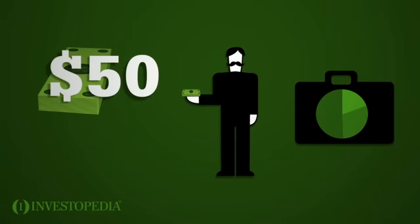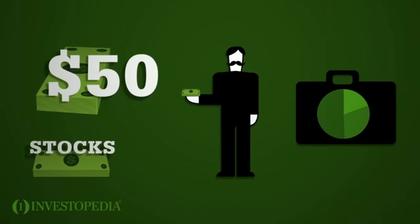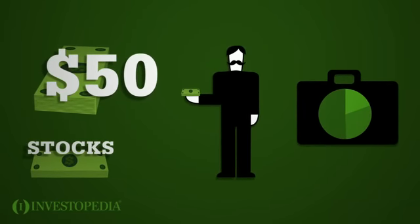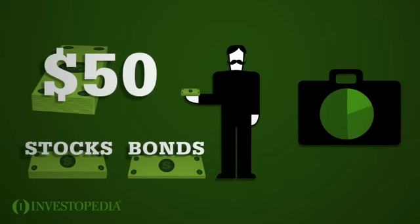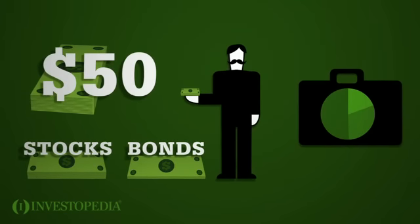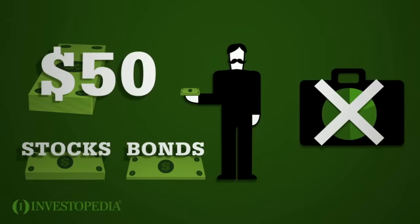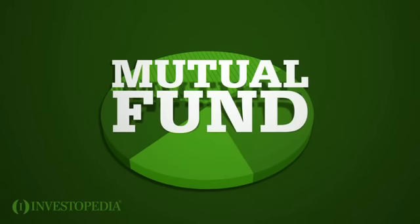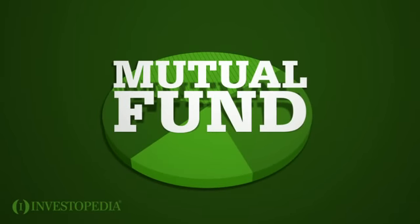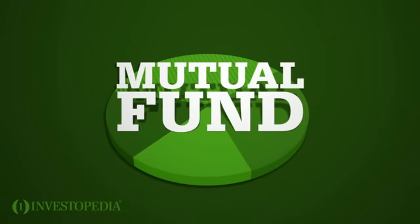However, Steve has only $50 to begin investing. This means he only has $25 for stocks and even less for bonds. Steve's lack of cash limits his ability to invest in a balanced way by himself. But he can invest in a mutual fund to get around this problem.